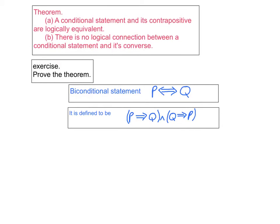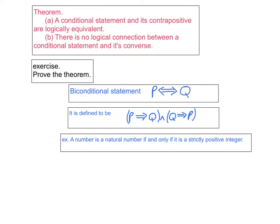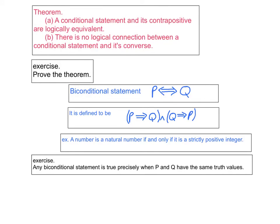An example you've seen where that's the case is the second example on the previous page. It's a good exercise for you to show that if you have a biconditional statement P if and only if Q, and if that's a true statement, then P and Q necessarily have exactly the same truth values. And conversely, if P and Q have exactly the same truth values, then the biconditional statement is true.